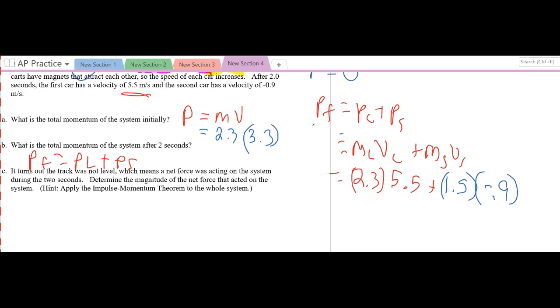Then in this problem, I get my momentum final afterwards equals 11.3 kilograms times meters per second. Going down to the last one, it turns out the track was not level, which means a net force was acting on the system during the two seconds. Determine the magnitude of the net force that acted on the system.